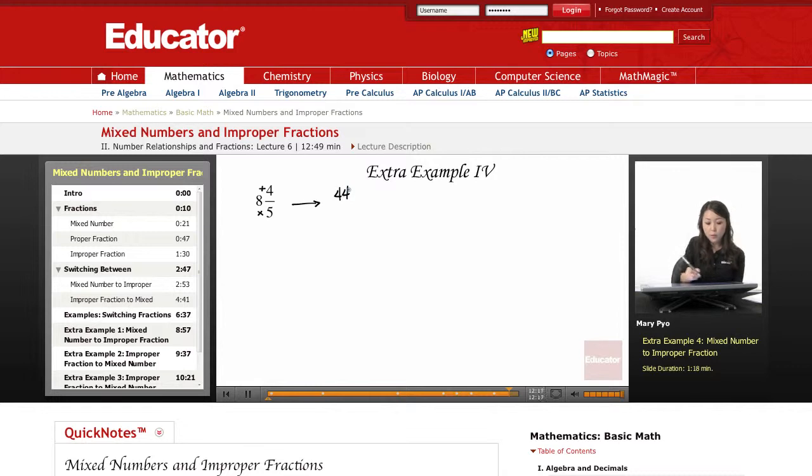That goes in the numerator of my improper fraction. And then the denominator has to stay the same. So then the denominator for this fraction is 5. So it's going to stay a 5 here.